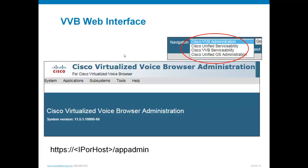I'm going to show you some screenshots here from the VB admin — there's not much visually different from calls on a Voice XML Gateway, but let's look at the options. If you point your browser to the IP or hostname of your virtualized voice browser followed by slash app admin, you get the VB admin screen. You'll also see other URLs for serviceability and OS administration, similar to other Cisco applications.